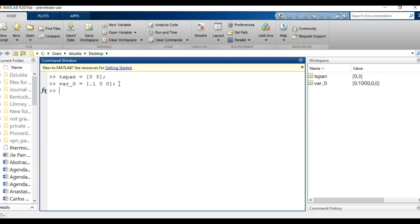We have our TSPAN, so we can do our solution. T, VAR as our output, is equal to ODE45, and we can say at silly_man, TSPAN, var_naught. There you go. Good, it worked.